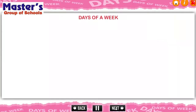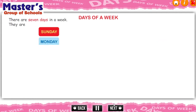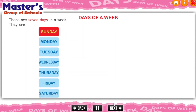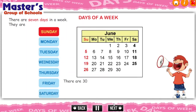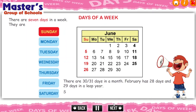Days of a week. There are 7 days in a week. They are Sunday, Monday, Tuesday, Wednesday, Thursday, Friday, Saturday. There are 30 or 31 days in a month. February has 28 days and 29 days in a leap year. Sunday is a holiday.